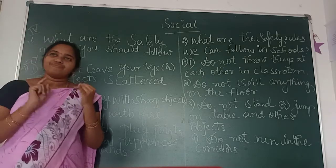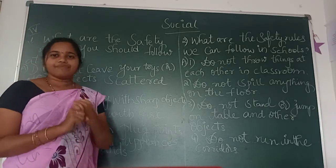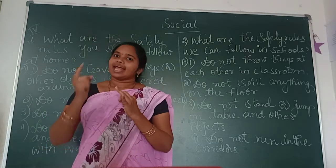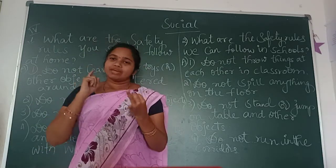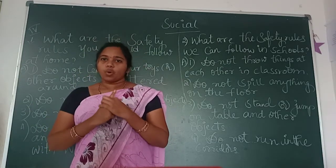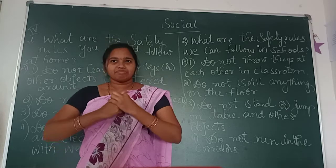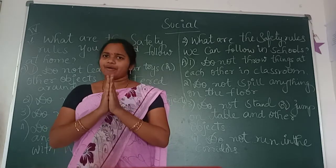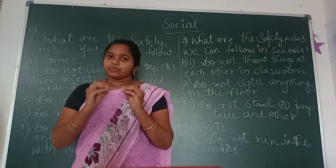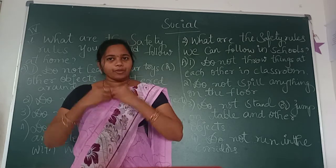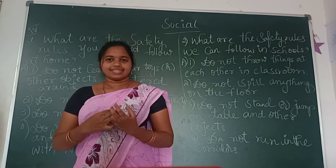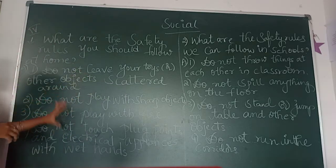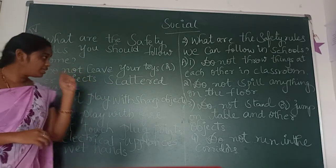See, children — everywhere, each and everywhere, we have to follow some safety rules. It could be at home, it could be at school, it could be on the road, a park, a temple. So each and everywhere we have to follow some rules, and we have to obey our parents and elders. Here, four safety rules I will explain, children.